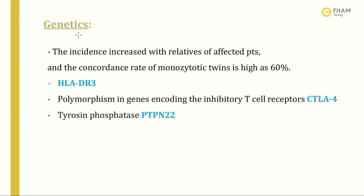Regarding genetics associated with Graves' disease, the incidence is increased in relatives of affected patients. The concordance rate in monozygotic twins is as high as 60% — if one twin is affected, there is a high likelihood that the other will also be affected.